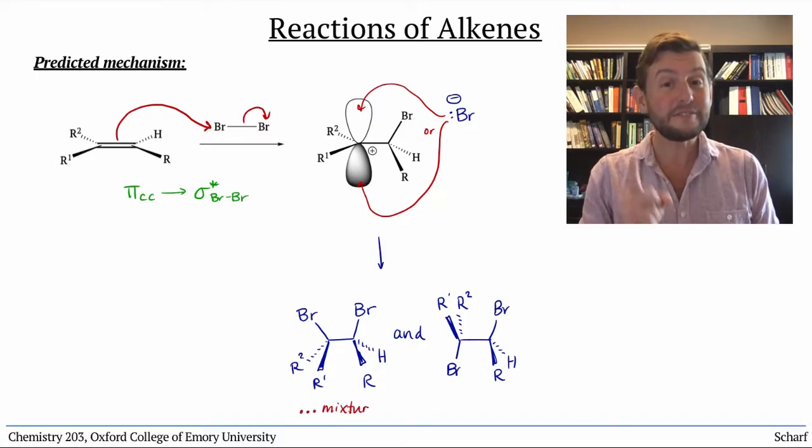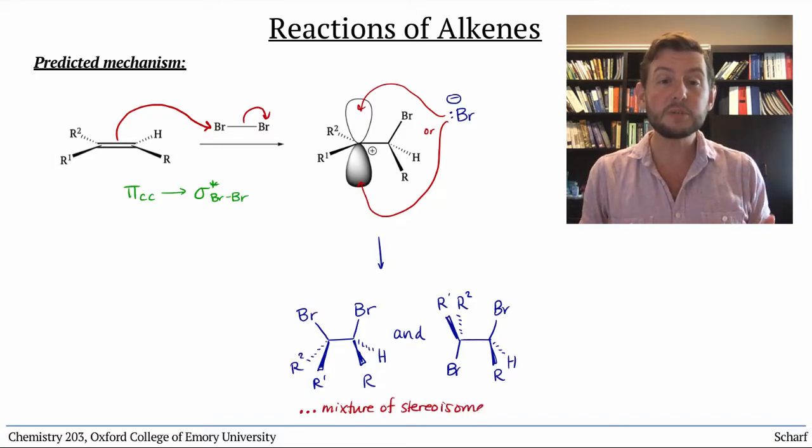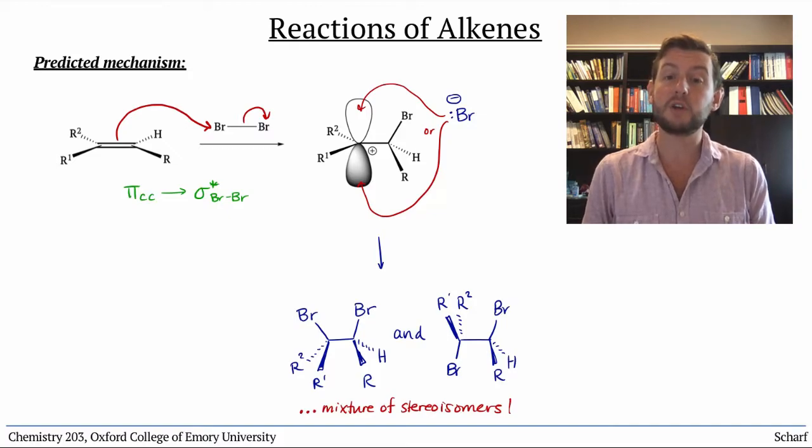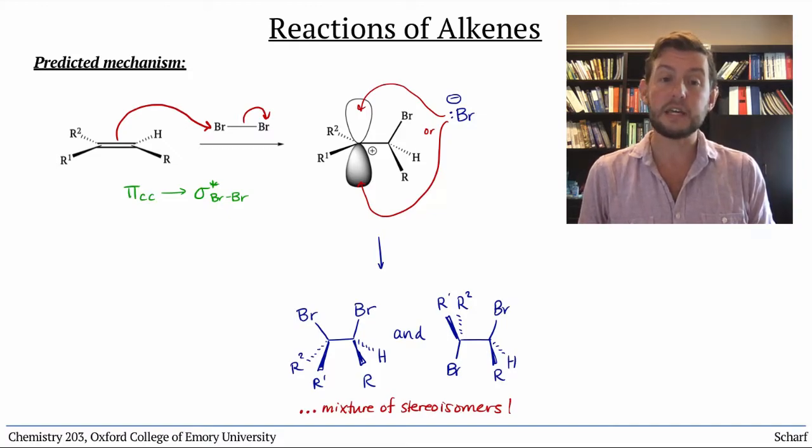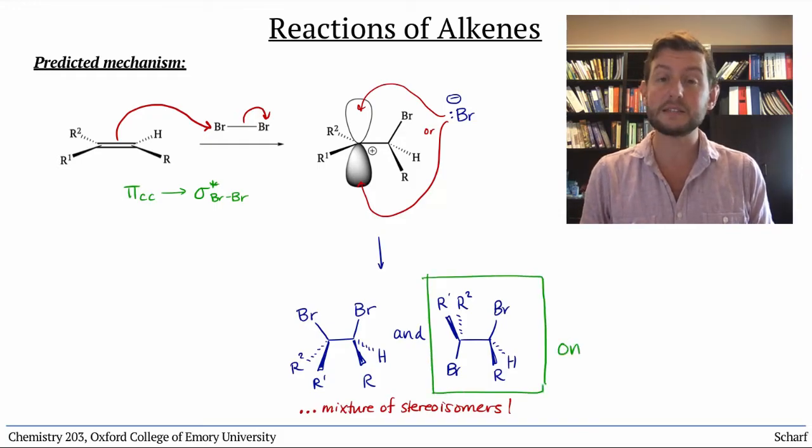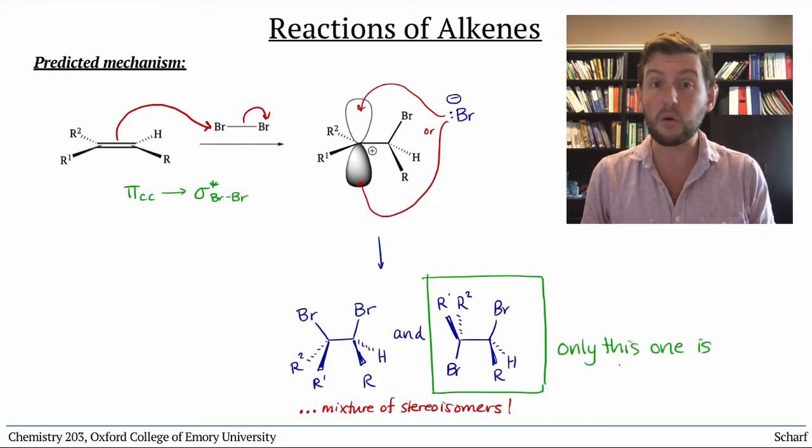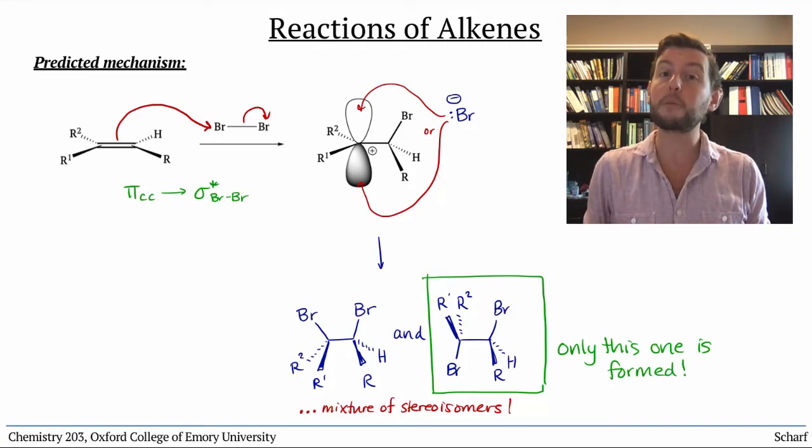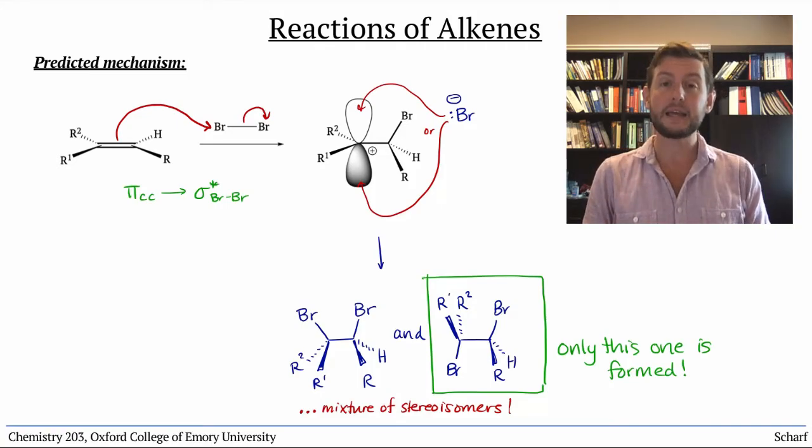In fact, the reaction between alkenes and Br2 does give dihalides, where we add a bromine atom to each of the carbons that was in the alkene, but we only get the trans diastereomer, zero of the cis. This implies that something must be wrong with our predicted mechanism.